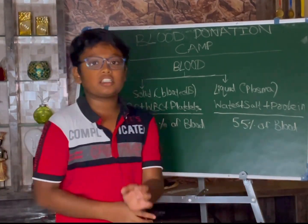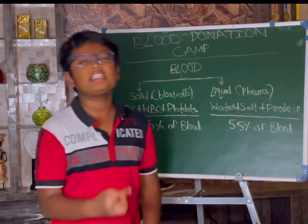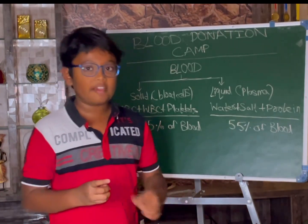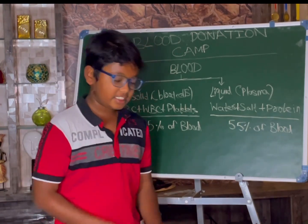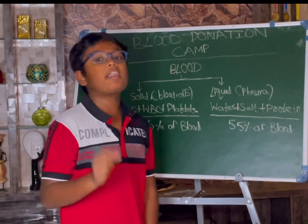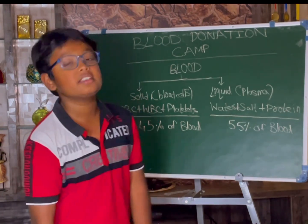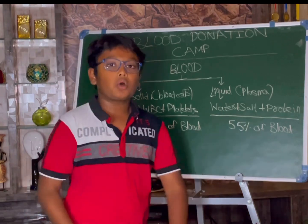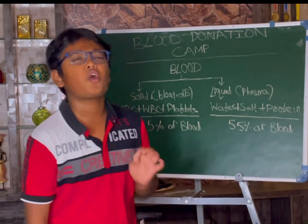Non-granulocytes consist of lymphocytes and monocytes. Now let us talk about the lifespan of blood. Red blood cells live 80 to 100 days. White blood cells live from 8 to 14 days. And platelets live from 4 to 5 days.